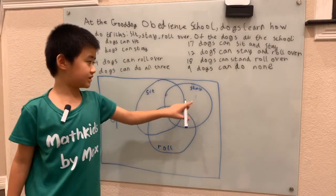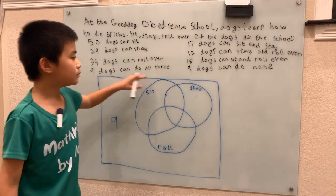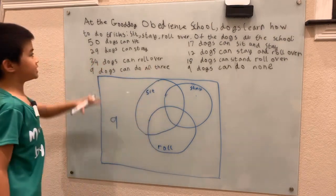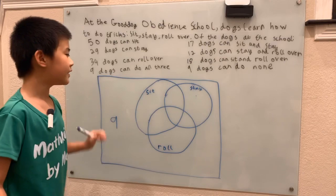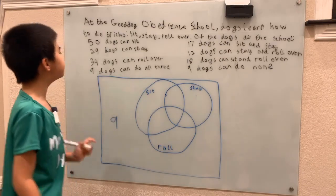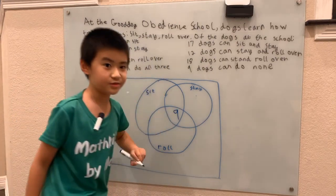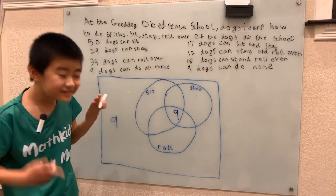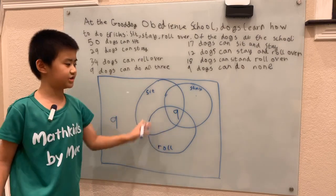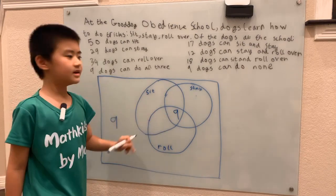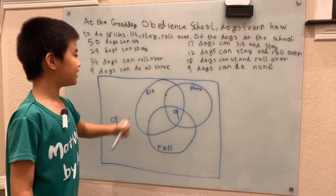We can't start filling in sit, stay, or roll yet because all we know is that the whole sit count is 50, but it's split up into four different categories. What we do know is that 9 dogs are the super dogs — that's the ones that can do all three. The region that has all three categories is right here — this is where all the super dogs go.